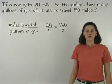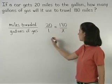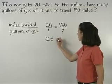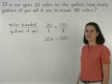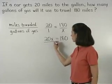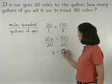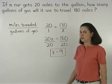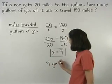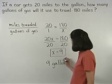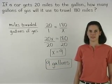Solving from here, we use the means-extremes property to get 20 times x, or 20x, equals 1 times 180, or 180. Dividing both sides by 20, x equals 9. So the car will use 9 gallons of gas to travel 180 miles.